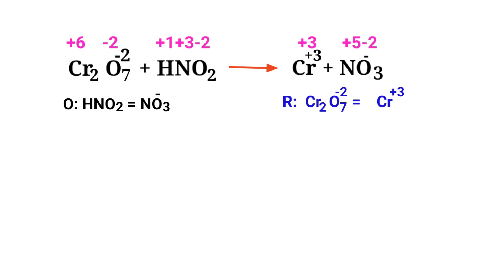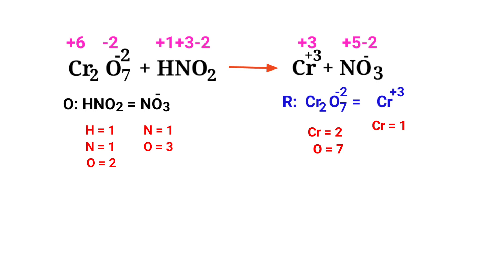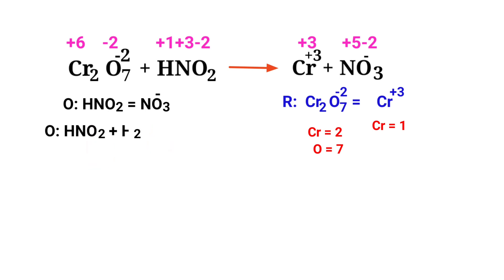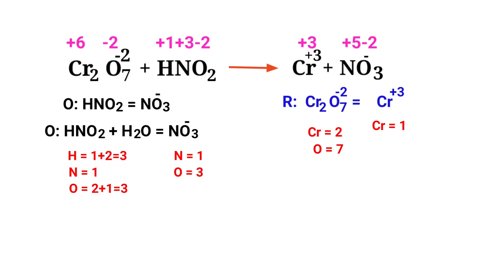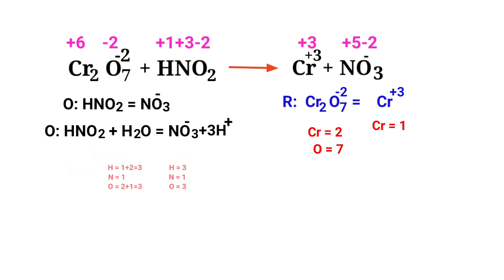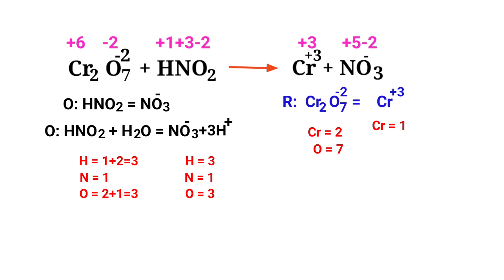Now balance the number of atoms in the two half reactions. In the oxidation half reaction, to balance the oxygen atoms you can produce water molecules. The oxygen atoms are now balanced. To balance the hydrogen atoms, you can produce H plus ions. Now the number of atoms are balanced in the oxidation half reaction.